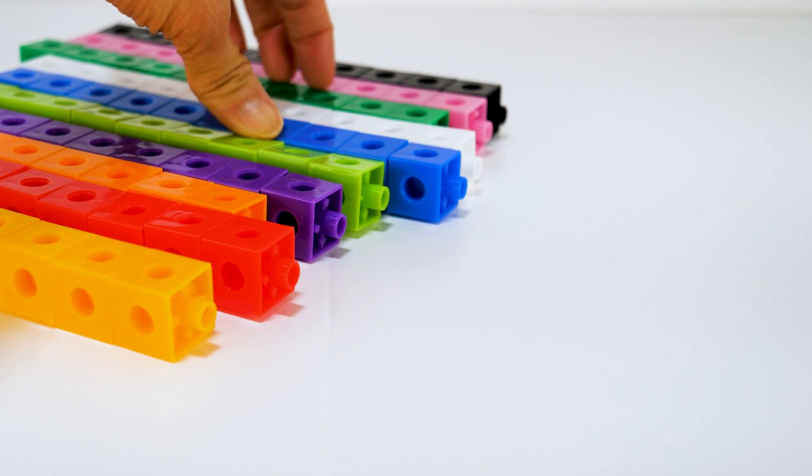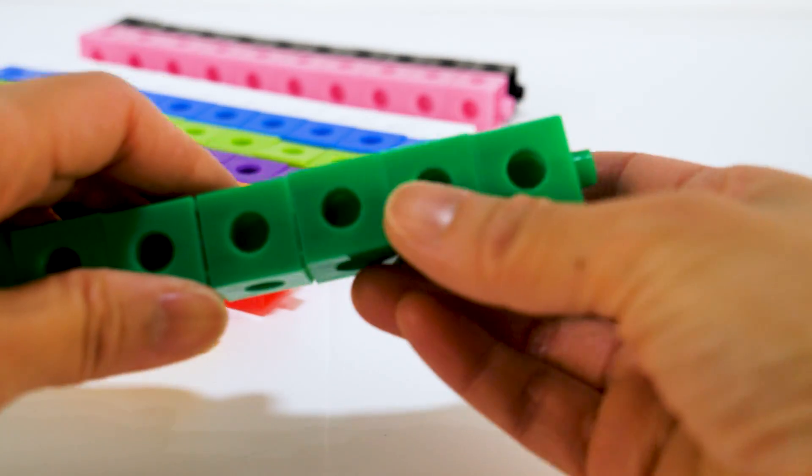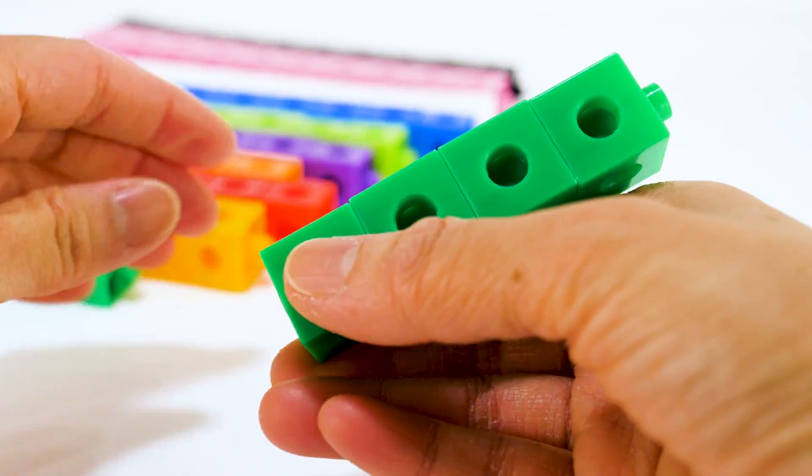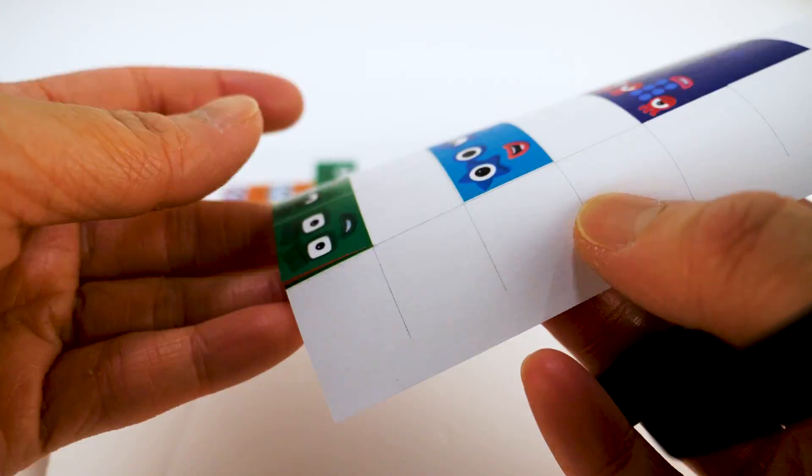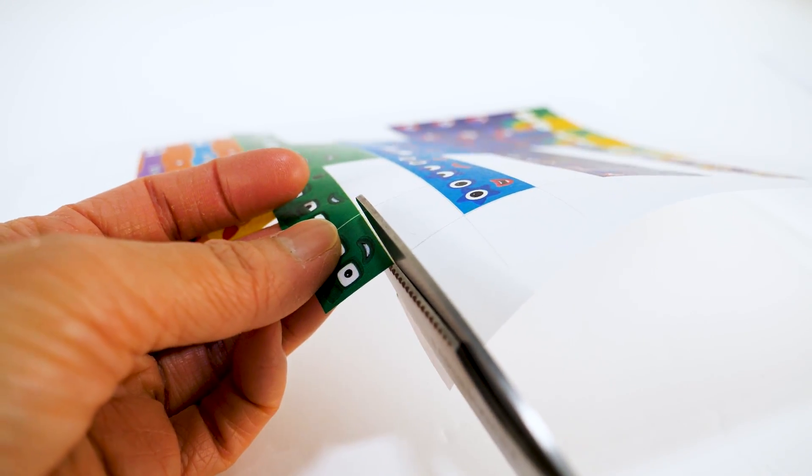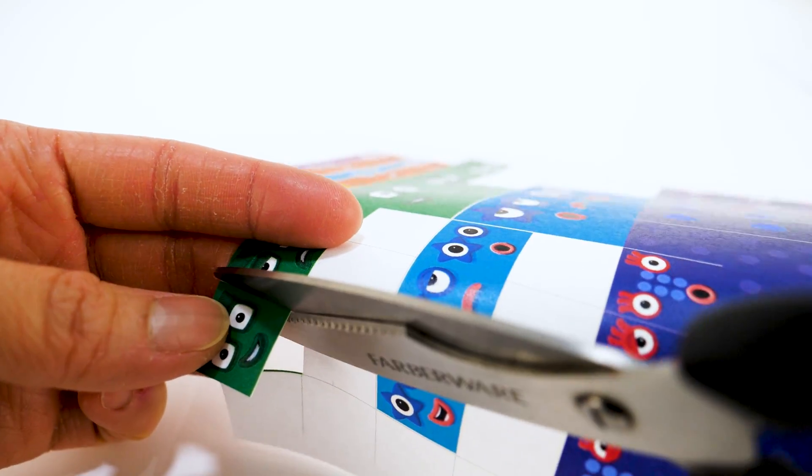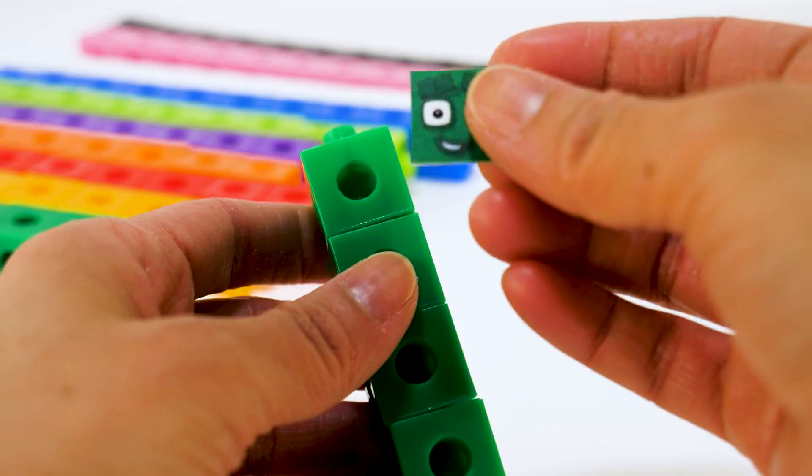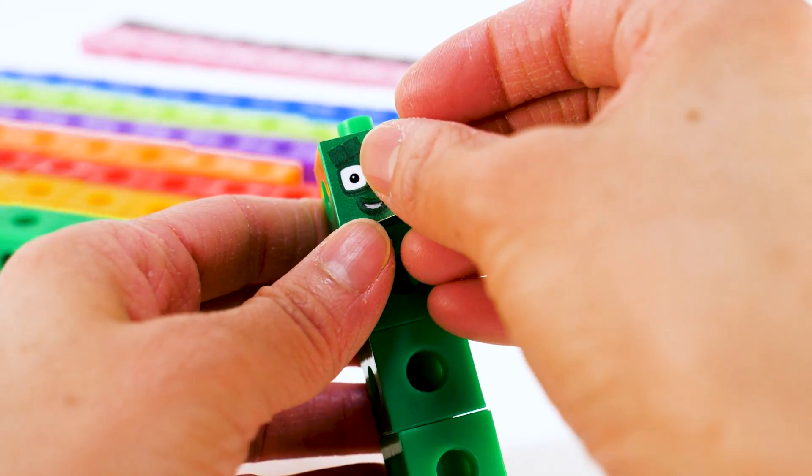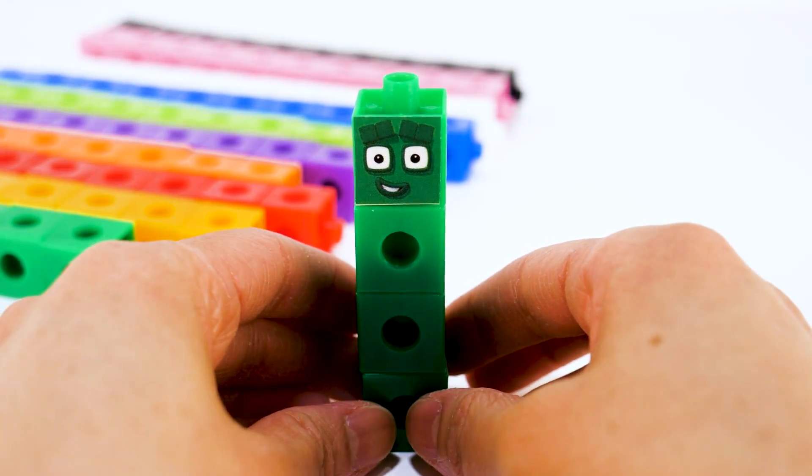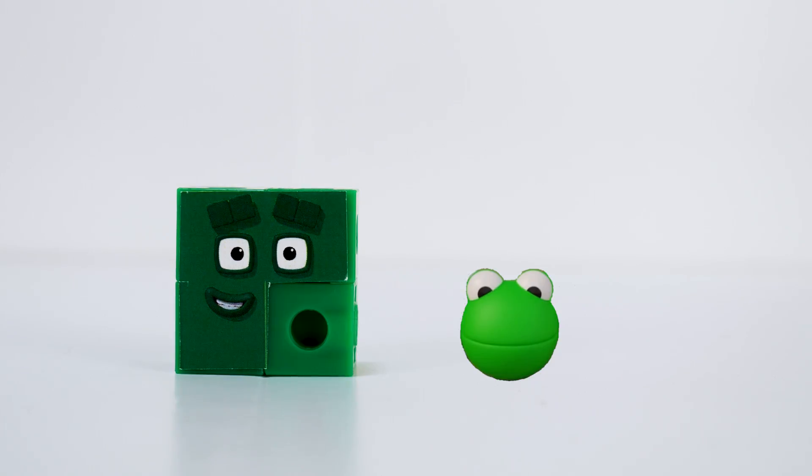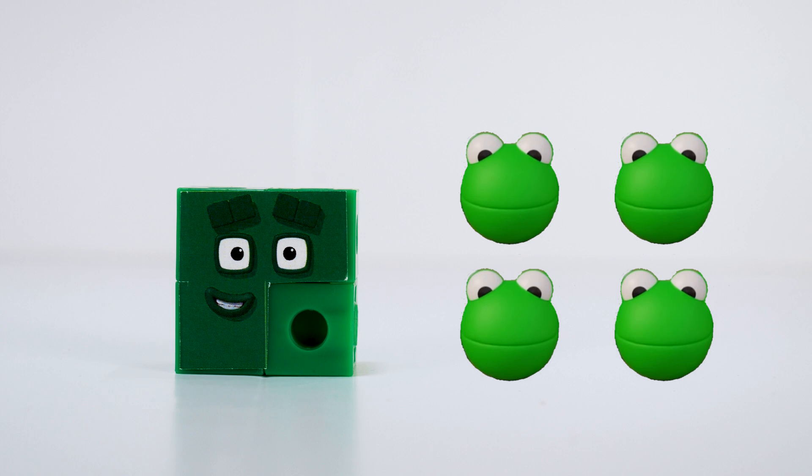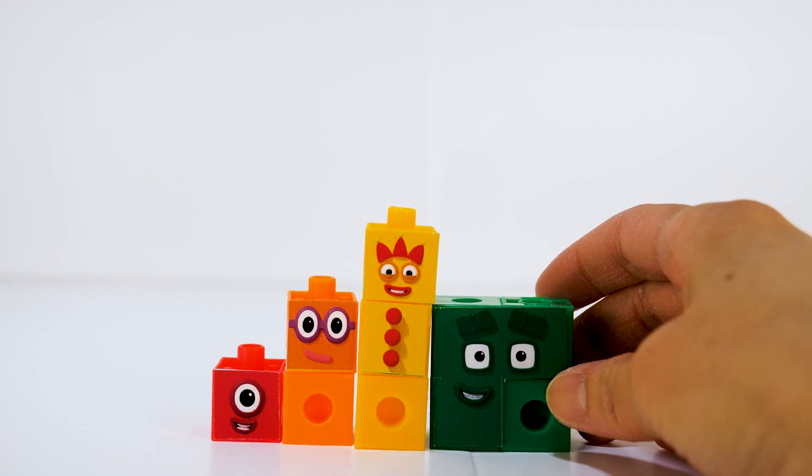Then we have number block 4. He is made up of four green blocks. Number block 4 has a pet named Squarey. He has square shaped eyes. Number block 4 loves to be a square. 1, 2, 3, 4. Number block 4.